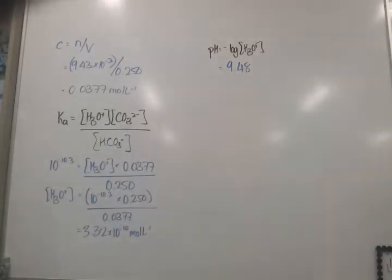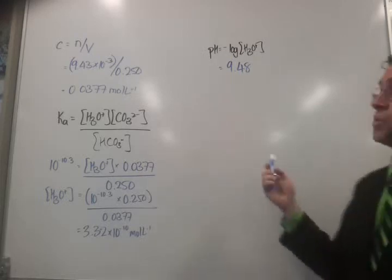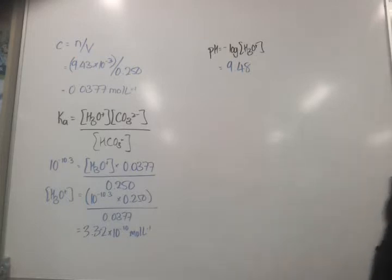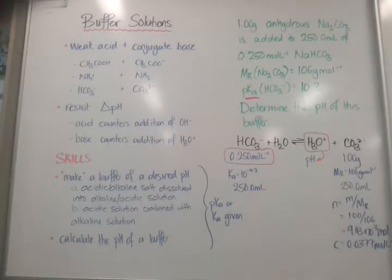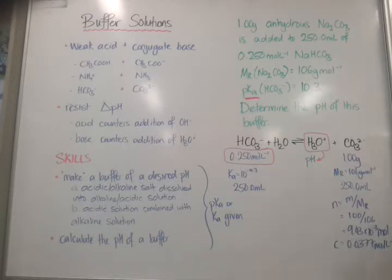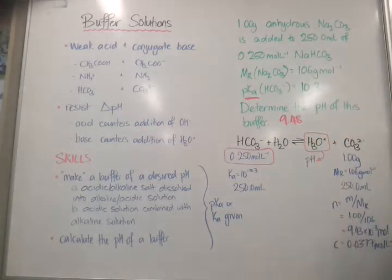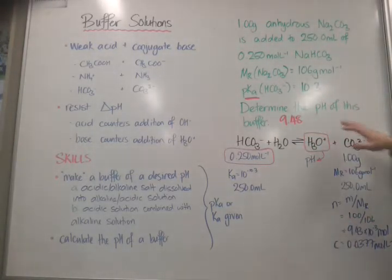Now, a general rule of thumb is that a buffer only works within plus or minus 1 of its pKa. That's why we have pKa values. If I go back to my original question, keeping in mind the answer was 9.48, we can actually say a little bit about this buffer. So, we found the answer was 9.48. This value is within 1 of 10.3, so it probably will be quite an effective buffer against both acids and bases.